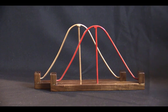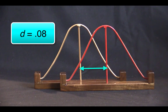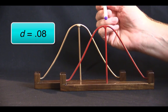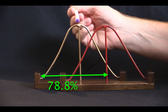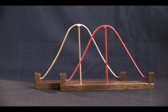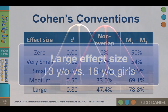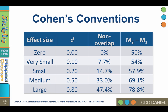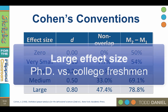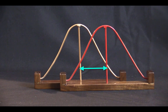A large effect size is easily seen. When d equals 0.8, there is a 47.4% non-overlap — almost 50% — and mean 2 is higher than 78.8% of the first distribution. There is a large effect of height difference between 13 and 18-year-old girls. Look at a classroom of 7th graders mixed with high school seniors and you should have no trouble separating them. Cohen describes a large effect as the difference in IQ between PhD holders and typical college freshmen. If there is a large effect size in your data, you should be able to see it by looking at the raw data.